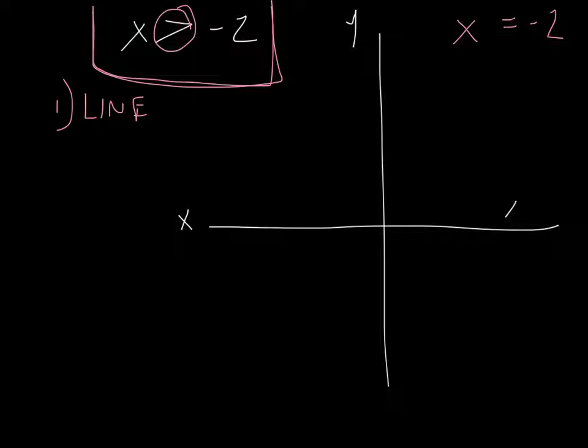That means that no matter what we put in for our coordinates on this line, it doesn't matter what the y is, x is always going to be negative 2. We can make y 0, we can make it 3, we can make it whatever. x will always be negative 2, so therefore we can plot some points on there.